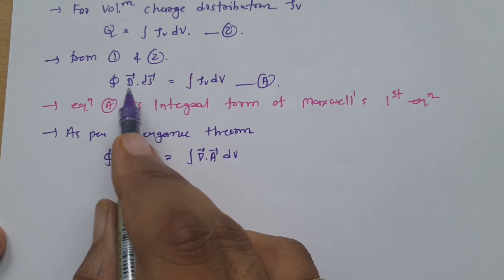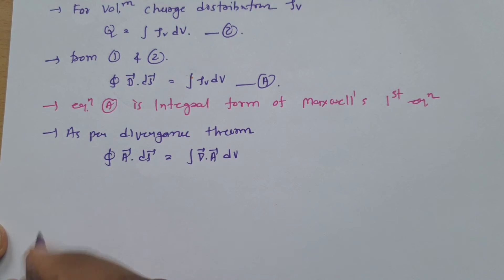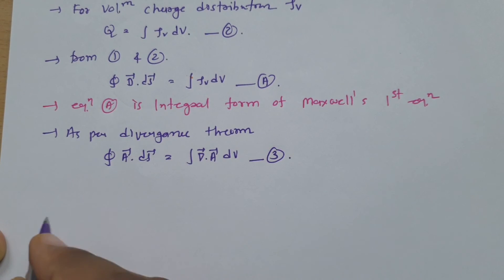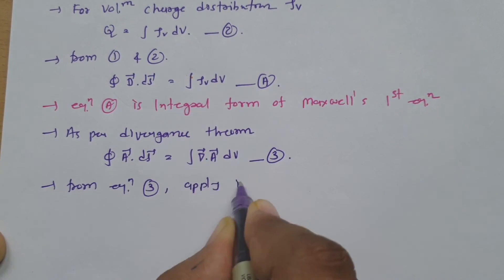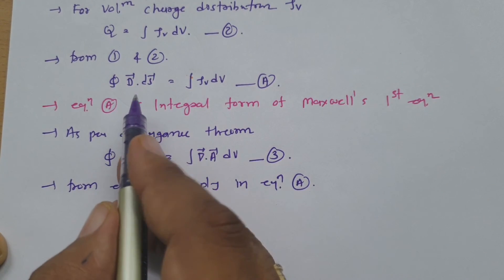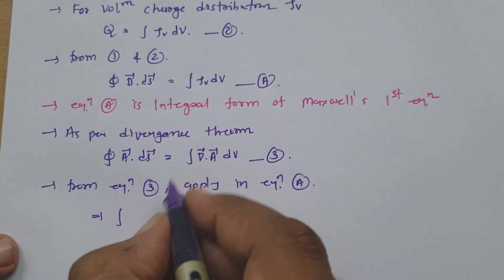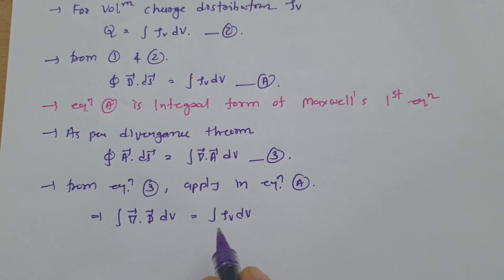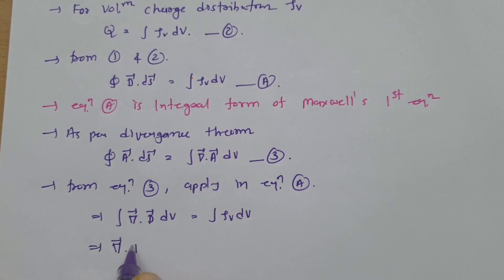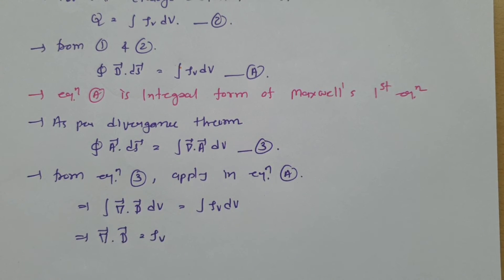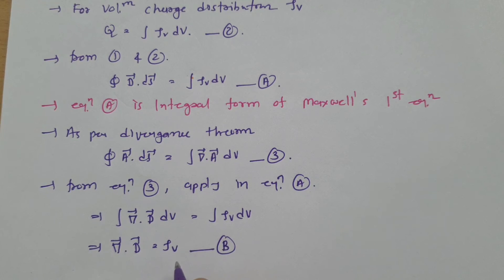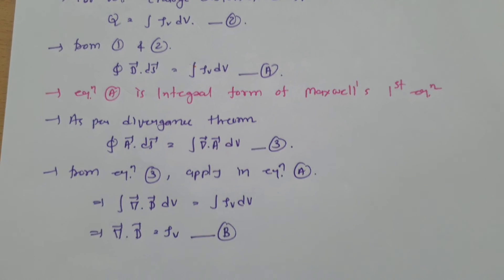If we apply this divergence theorem to the surface integral part of the integral form of Maxwell's first equation, then equation A can be redefined. The left side becomes del dot D dv, and that is equals to the integration of rho-v dv. At both sides there is volume integration, so we can cancel that. Therefore, del dot D equals rho-v. This is the differential form of Maxwell's first equation, also called the point form of Maxwell's first equation.